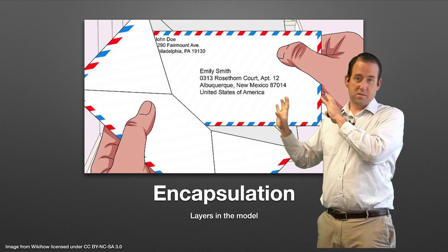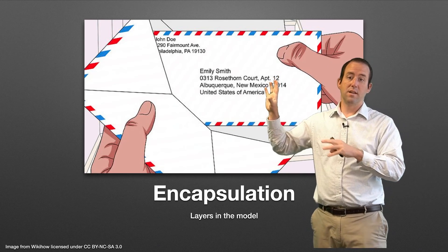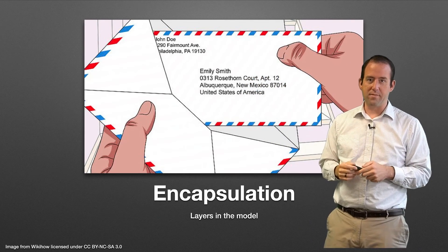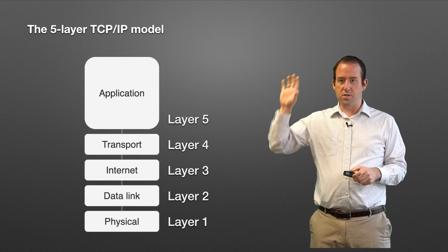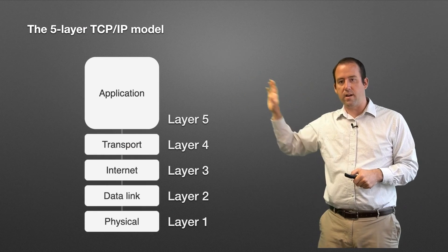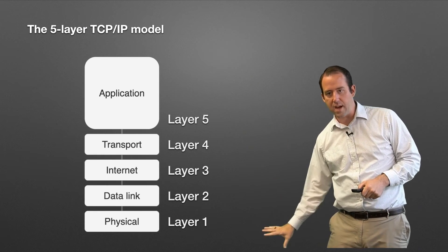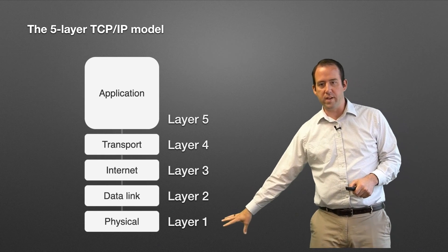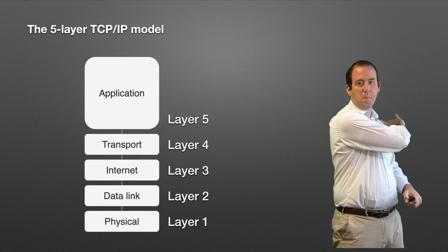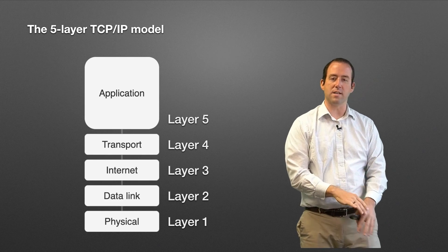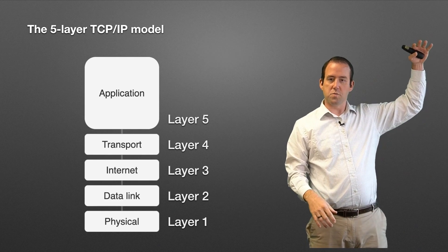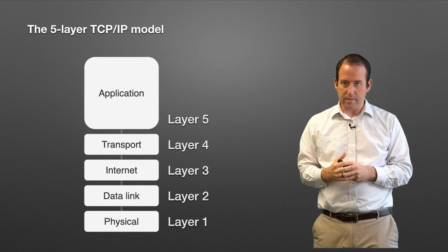Each layer has its own addresses, which fits nicely with the envelopes analogy. As you go down, you start at the application layer and move down into bits and bytes — ones and zeros — traveling across the network. Then each layer gets unwrapped back up on the other end.